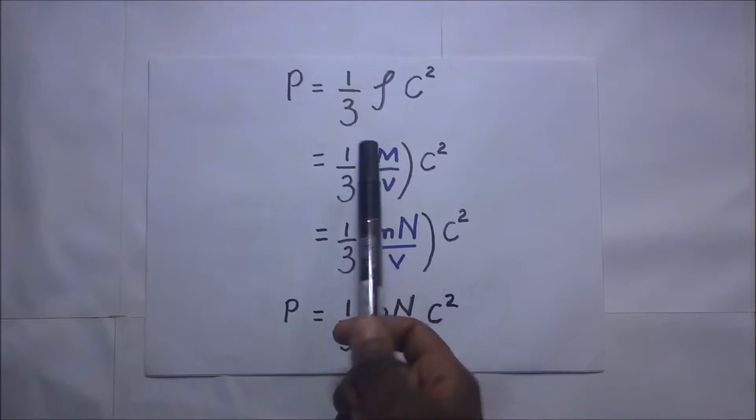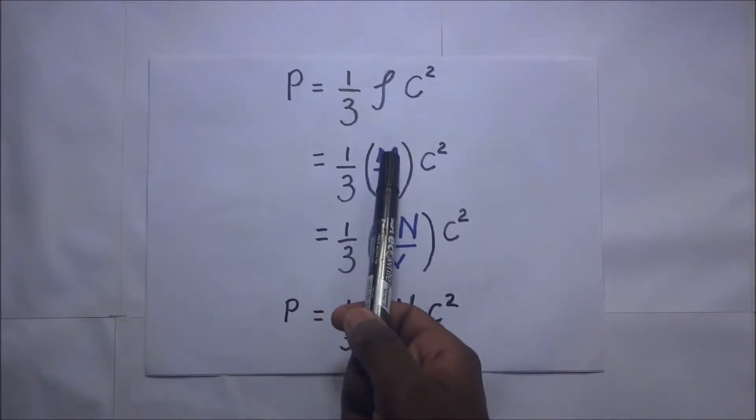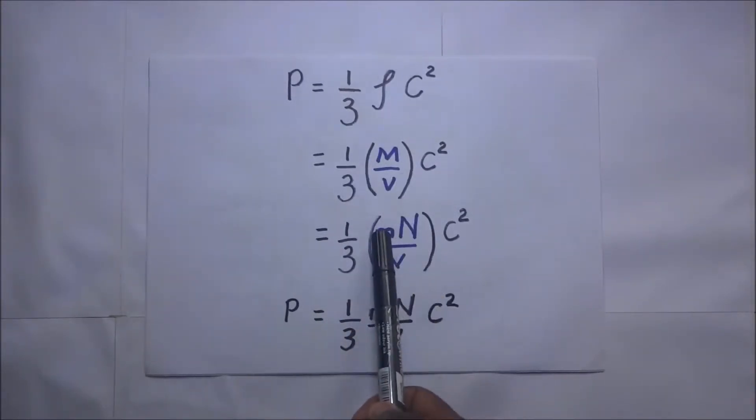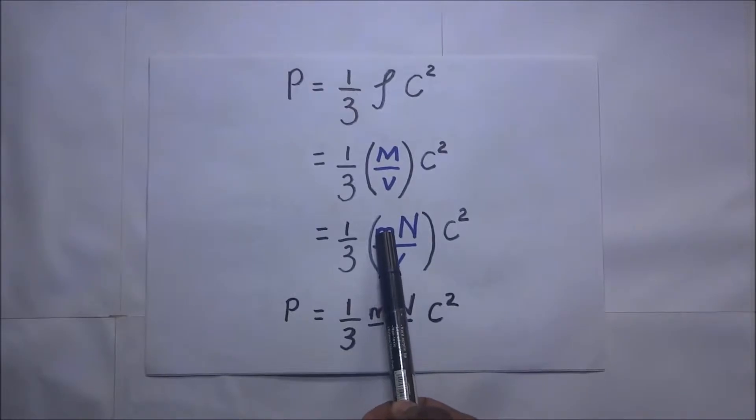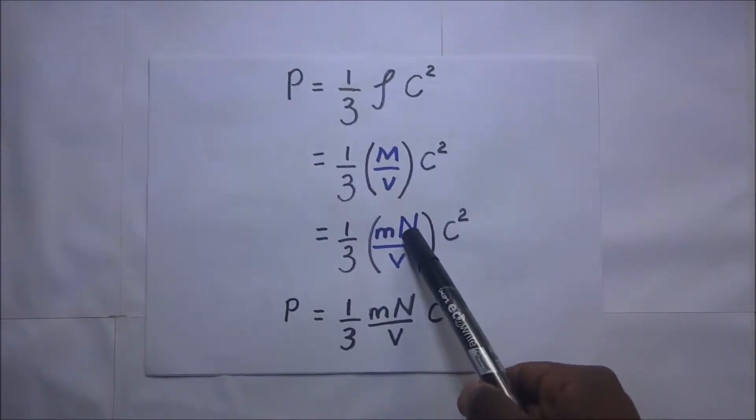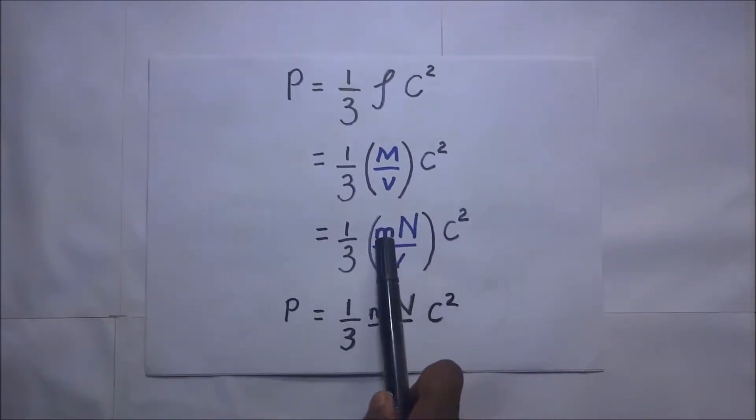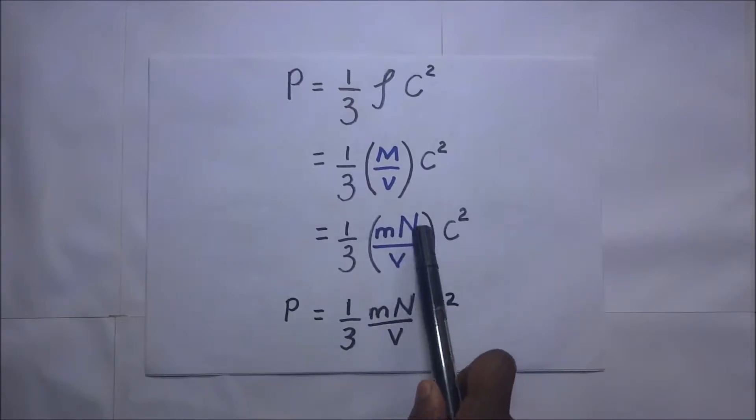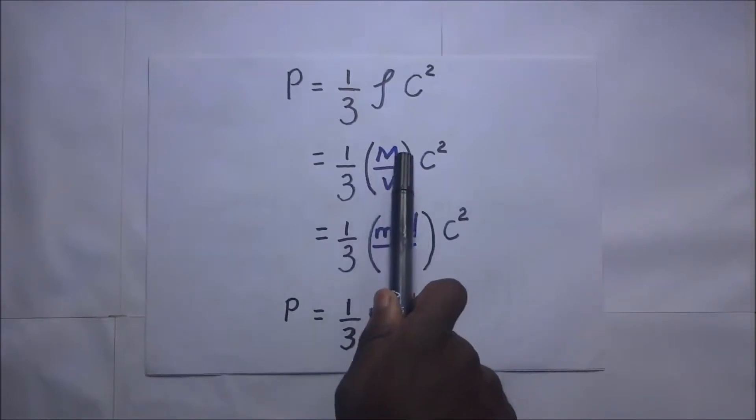Now the mass of the gas can be given as mass of each particle of that gas, denoted by small m, times capital N, which represents the total number of particles of the gas. If you get the mass of each individual particle multiplied by capital N, the total number of the particles in that gas, this combination is going to give you capital M, which gives you the total mass of the gas.